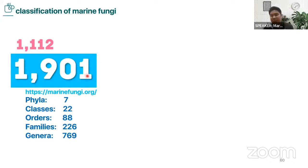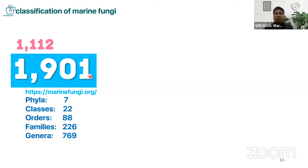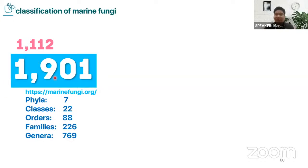You can access this on the marinefungi.org website. We incorporate all the updates of marine fungal classification there. When we find new species or revisions of certain placements of taxa, or a taxon is raised to a higher level or rank, we update the marine fungi. Now we have seven phyla, 22 classes, 88 orders, and 1,901 species — but still counting. I'm still revising the number; maybe in the next week or two we will have additional numbers.